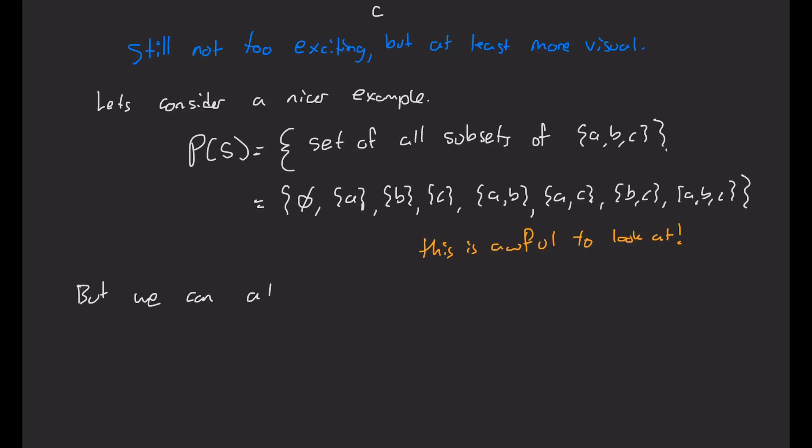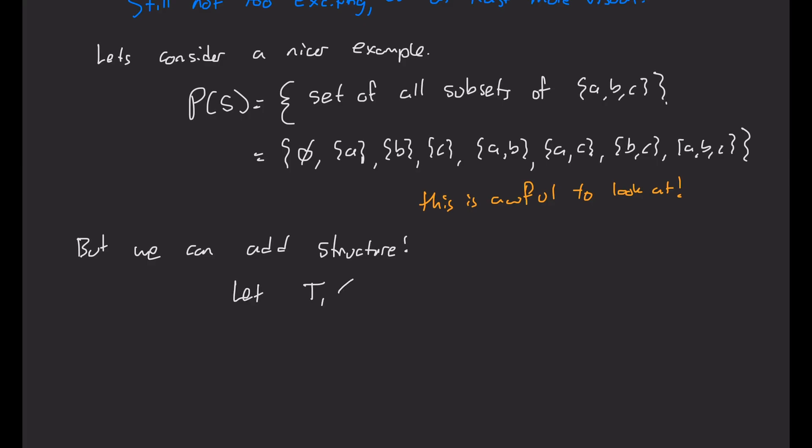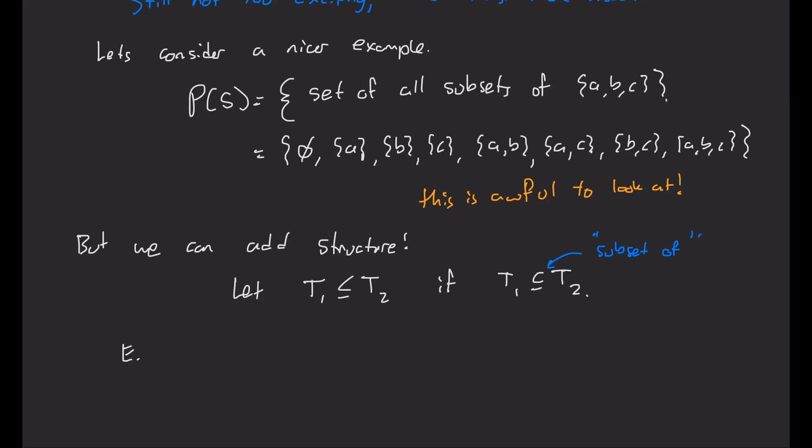But we can add structure. So let's say a subset T1 is less than or equal to a subset T2 if T1 is contained in T2. So this slightly curvier version is the subset notation. And notice the similarity between these two symbols. So, for example, the set A is contained in A, B. So we say A is less than or equal to A, B. But the set A by itself is not contained in B, C, and vice versa. So actually, these two are incomparable sets.